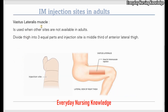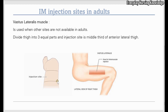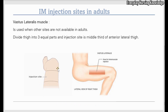Second is the vastus lateralis muscle of the thigh. It is used when other sites are not available in adults, but in infants vastus lateralis is the preferred site of intramuscular injection. You divide the thigh into three equal quadrants and the injection site is the lateral — meaning outer — part of the thigh. Specifically, the injection site is the middle third of the anterior lateral thigh.